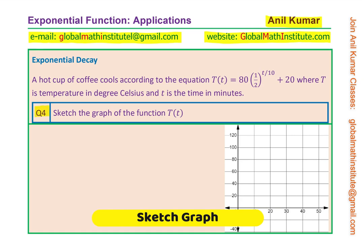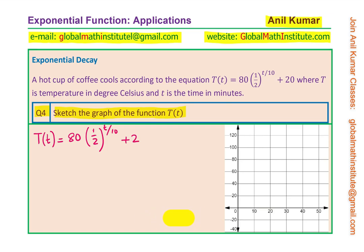Now let's look into question number 4, which is to sketch the graph of the function. When sketching the graph, what are the key things to look into? Let me rewrite the equation: temperature at any instance of time t in minutes is given as 80 times one-half to the power of T over 10, plus 20. We already calculated that when T is 0, the temperature is 100 degrees Celsius — so the temperature starts at 100. Mark this point on the graph.